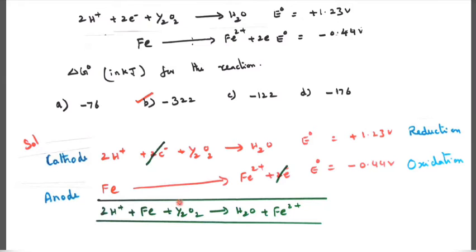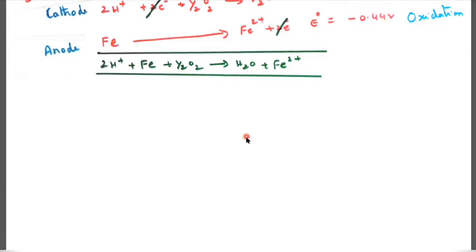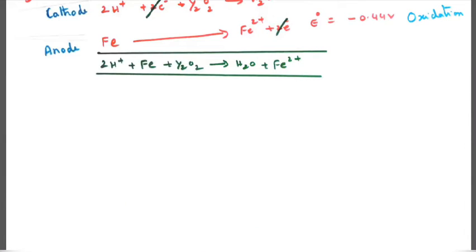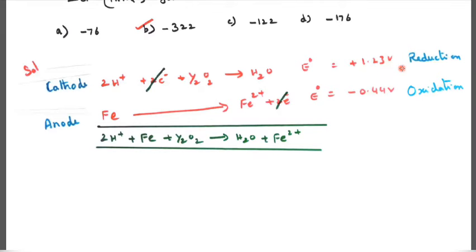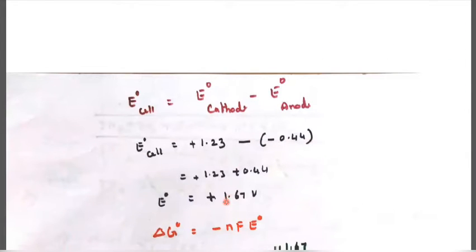Write cathode as is and anode in opposite direction. 2H+ plus Fe plus O2 gives H2O plus Fe2+. The E0 cell is equal to E0 cathode minus E0 anode. E0 cathode is 1.23 voltage minus E0 anode which is minus 0.44 voltage. Minus of minus is plus, so adding gives 1.67 as E0 value.